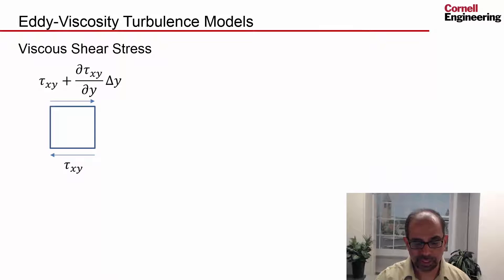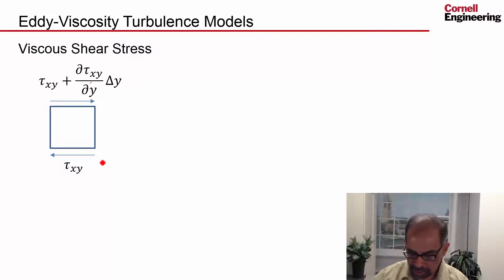I go back to the viscous shear stress. If I look at a vanishingly small chunk of fluid or fluid particle moving through the flow, it experiences a shear due to viscous forces. That's the shear in the x direction. We wrote that shear in terms of the velocity gradients, and you get the coefficient of viscosity μ. For a Newtonian fluid, μ is a constant or could be a function of temperature.